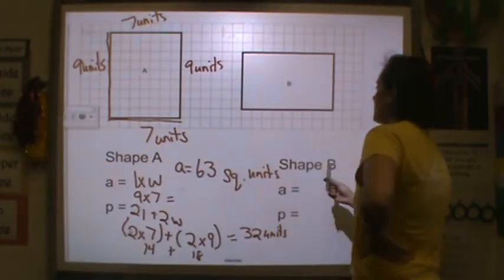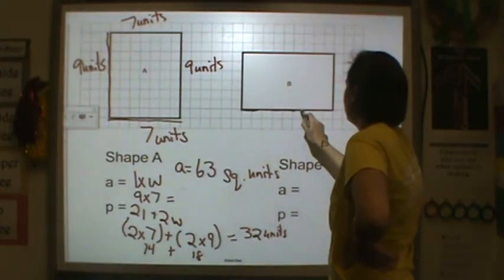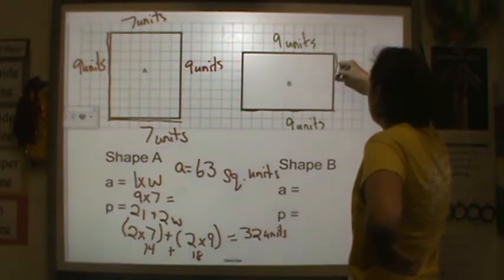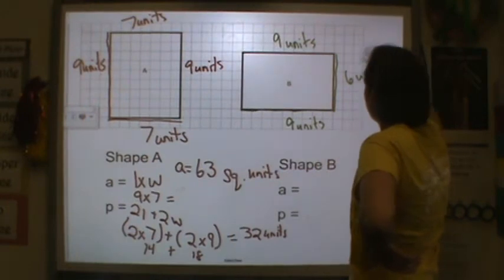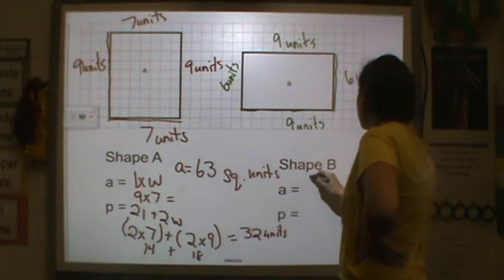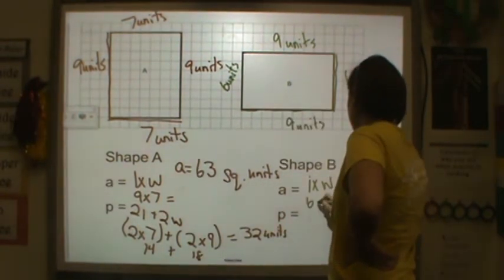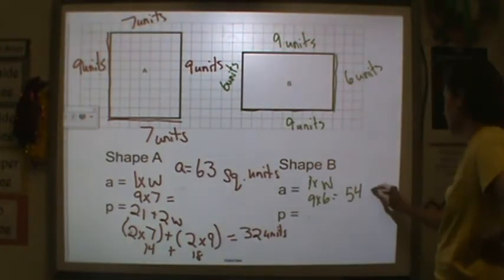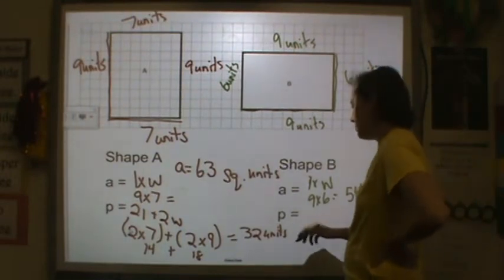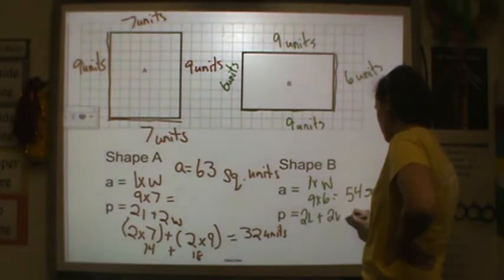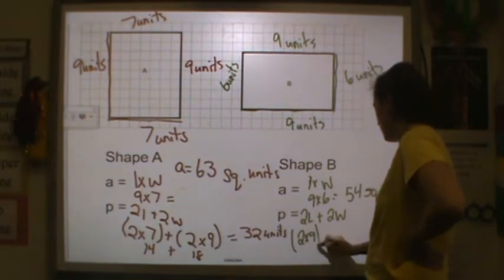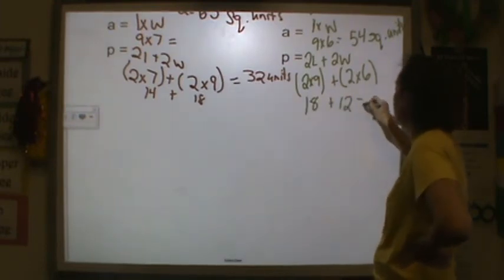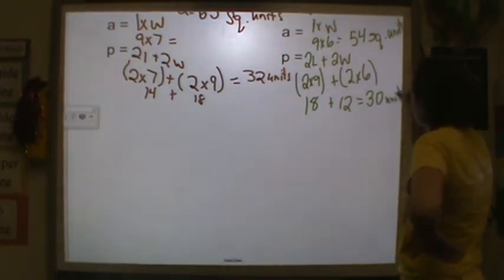Now let's do shape B. Across the side I have 9 units, and the width is 6 units. Area equals length times width, so area equals 9 times 6 equals 54 square units. For perimeter using 2L plus 2W: 2 times 9 plus 2 times 6 equals 18 plus 12 equals 30 units.